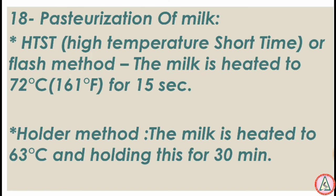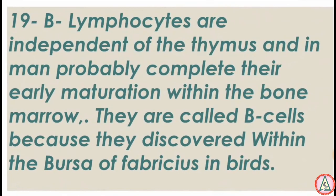The holder method holds the milk at 63 degrees centigrade for 30 minutes. B lymphocytes are independent of the thymus and probably complete their early maturation within the bone marrow. They are called B cells because they were discovered within the bursa of Fabricius in birds.